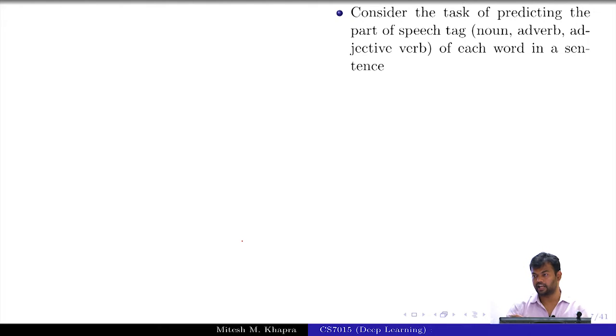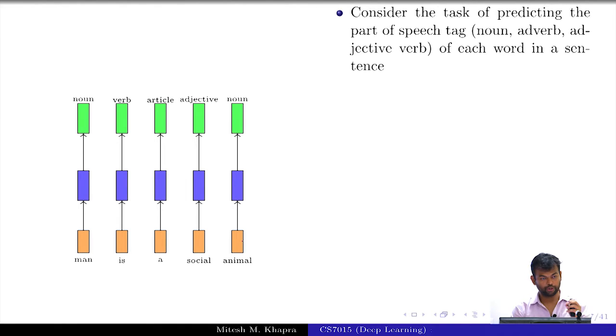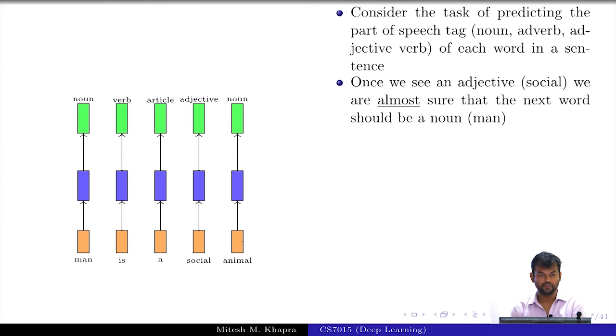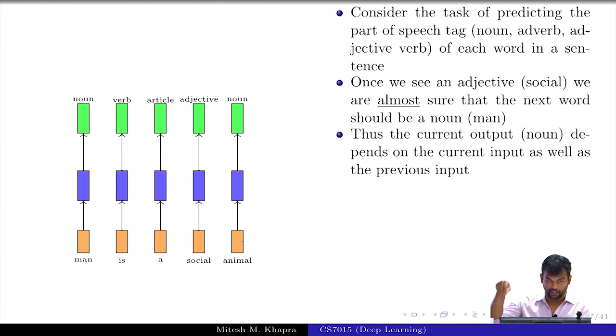One classic example is the task of predicting the part of speech tag of every word in a sentence. I am given a sentence 'man is a social animal' and for every word I want to predict whether it is a noun, adverb, adjective, verb, or any other part of speech tag. Notice that once we see an adjective - in this case 'social' - we are almost sure that the next word is going to be a noun, or at least we are sure that the next word cannot be an article or most likely will not be a verb. There is a very high prior that the next word is going to be a noun. That is why these inputs are actually dependent on each other. The current output not only depends on the current input, but also depends on the previous input.